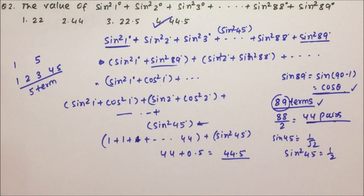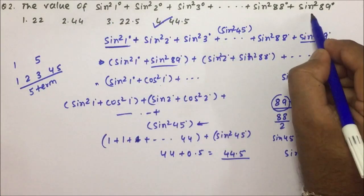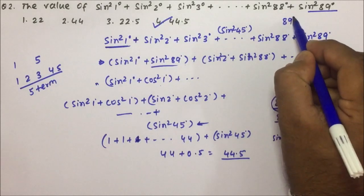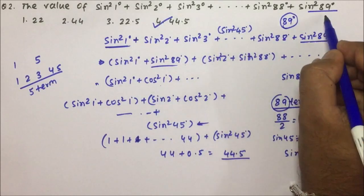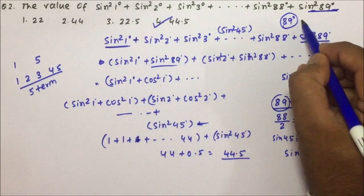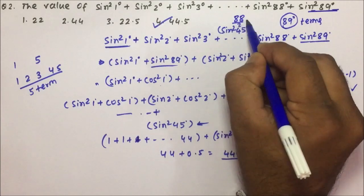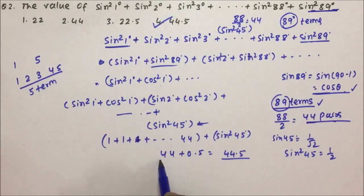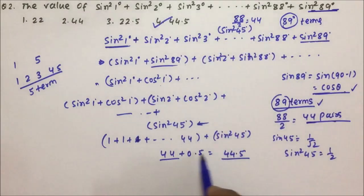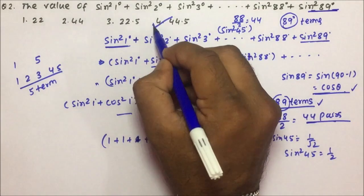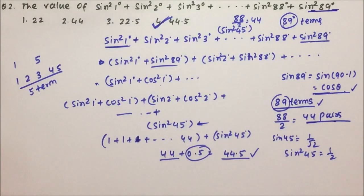Once you understand this question, it will become one of the very easy questions for you. Once you see the question, you know there are 89 terms. Out of those 89 terms, 88 divided by 2 gives 44 pairs, which equals 44, plus sin²45° = 0.5. So 44.5 — you will definitely be able to get the answer in seconds. All these questions are very easy, and I hope you will be able to do them in the exam as well. Thanks a lot for watching the video.